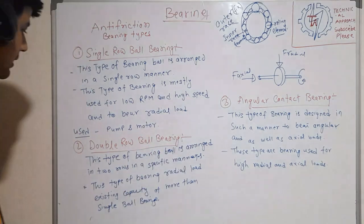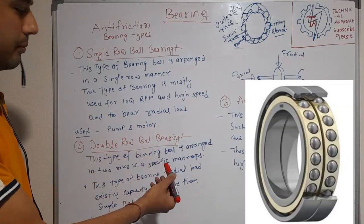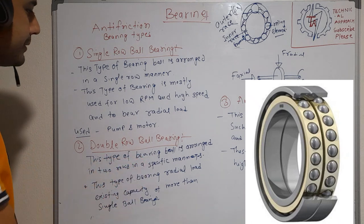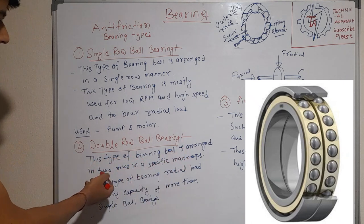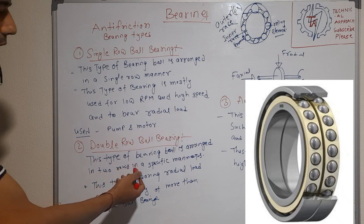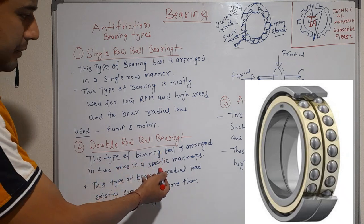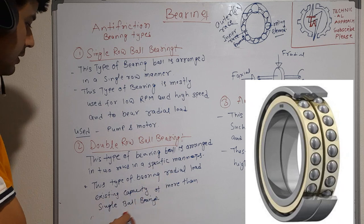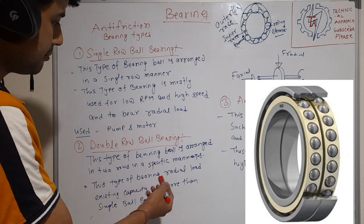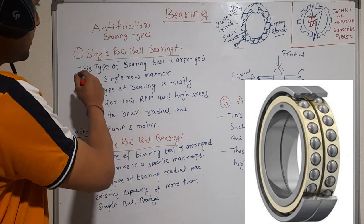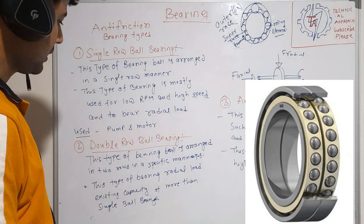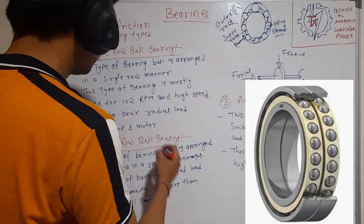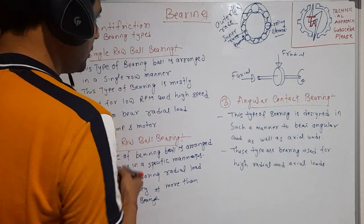Another type is the double row ball bearing. In this type, balls are arranged in two rows in a specific manner. This type of bearing has a radial load carrying capacity greater than that of the single row ball bearing.